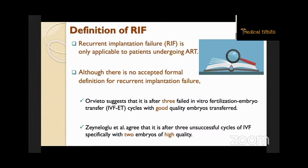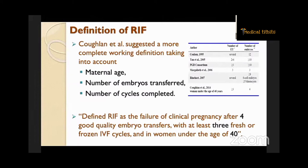However, the Colon group has suggested a more complete working definition, taking into account maternal age, number of embryo transfers, and number of cycles completed. She defined RIF as the failure of clinical pregnancy after four good quality embryo transfers with at least three fresh or frozen IVF cycles, in women under the age of 40 years.